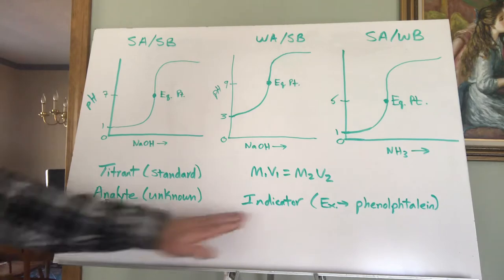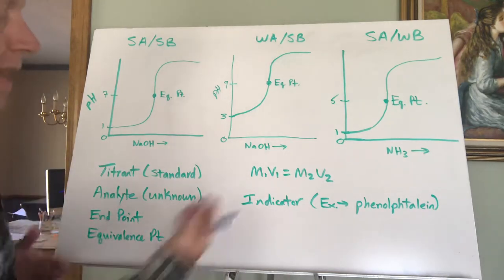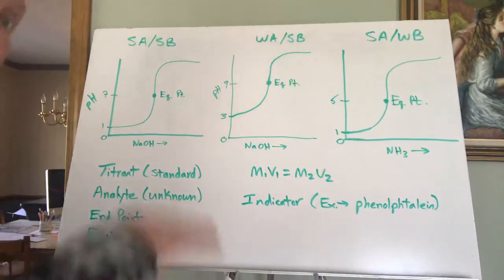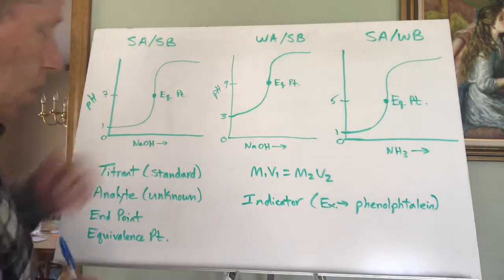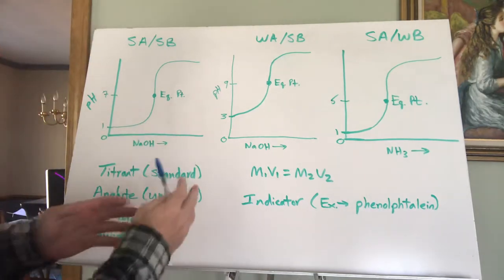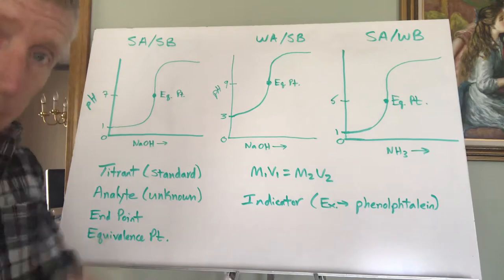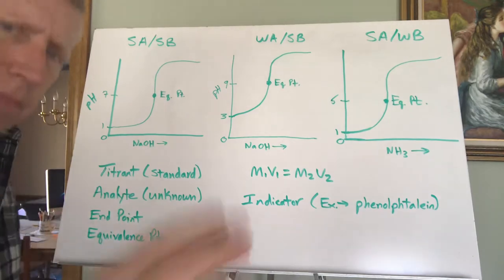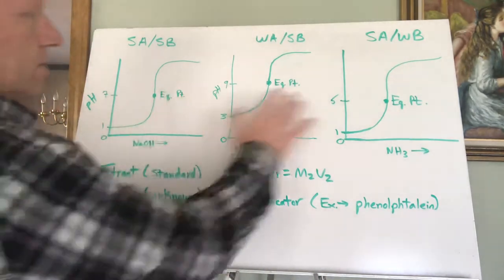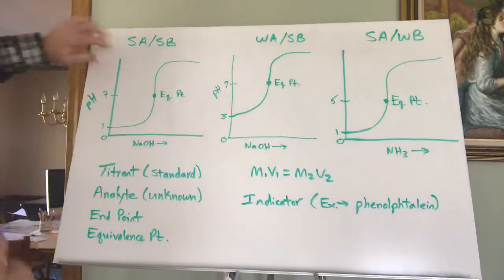We also have something called the endpoint, which has to do with indicators turning colors — that lets you know when you're done with your titration, when you can stop adding the known to the unknown. That endpoint is around what's called the equivalence point, which is a little more tricky to explain. Up here I have three different titration curves.